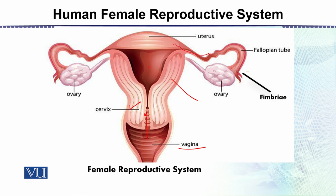From the uterus, there extend tubes called the Fallopian tubes. Each Fallopian tube terminates in a structure with finger-like projections resembling tentacles, called fimbria, which move to sweep the egg. The ovaries are almond-sized, oblong structures located in the lower abdomen, one on each side of the uterus.